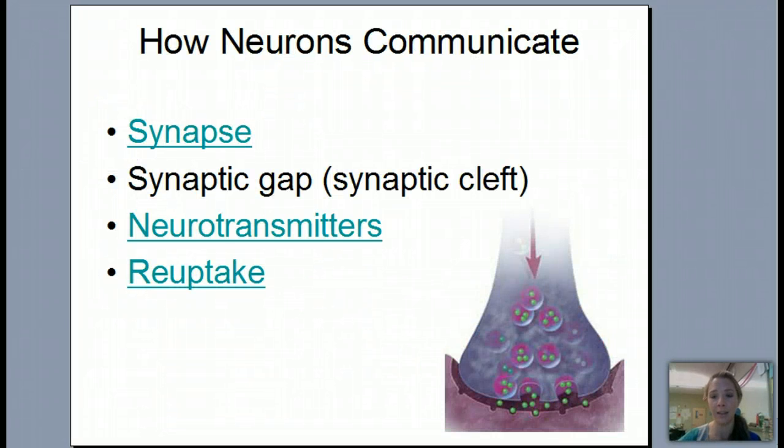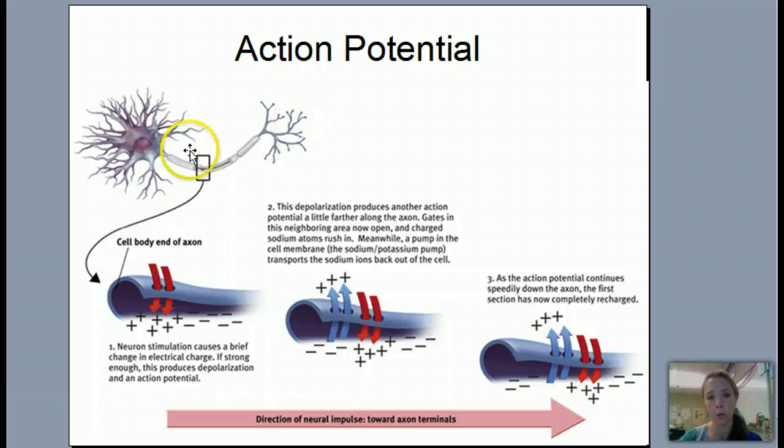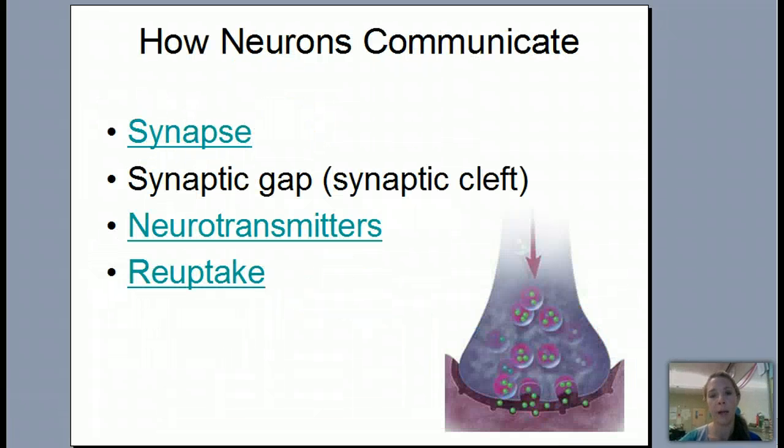It then hits the end here, right here, where my terminal buttons, and that's how neurons really communicate to each other, something called the synapse or the gap, this area right here in between the end of the terminal button and the dendrites of the next cell, okay? We're going to have a separate lecture on neurotransmitters,